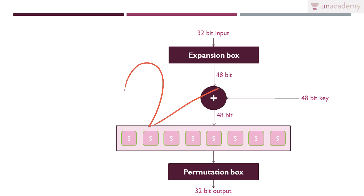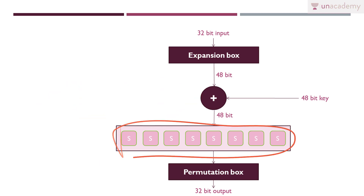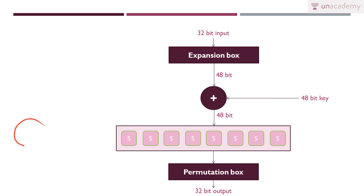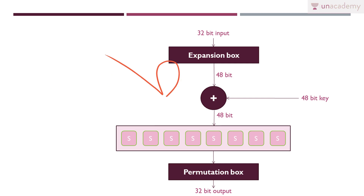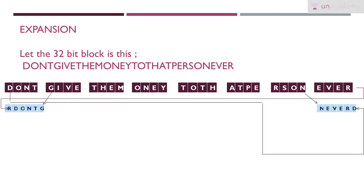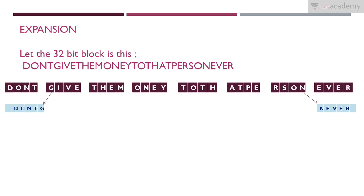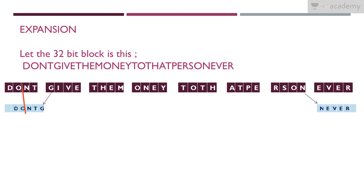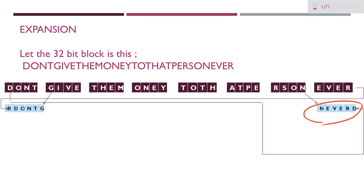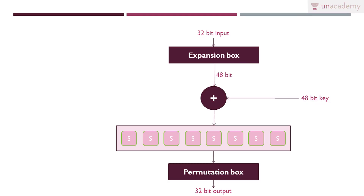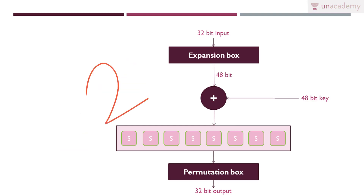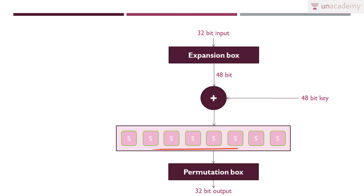That is why we use S-boxes, which are substitution boxes. In the case of expansion we had 4 bits and made it into 6 bits. Similarly, to compress 48 bit into 32 bit, we need to change 6 bits into 4 bits. So let us see what is really happening inside these S-boxes.